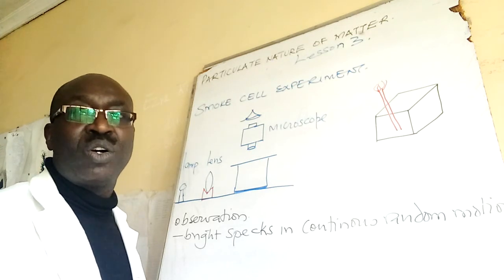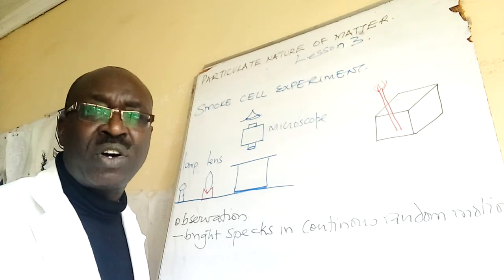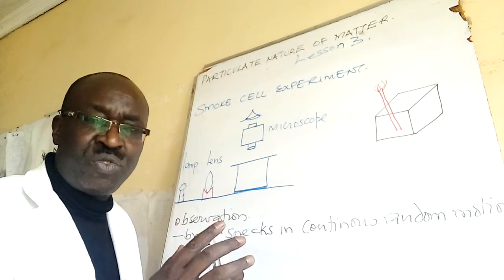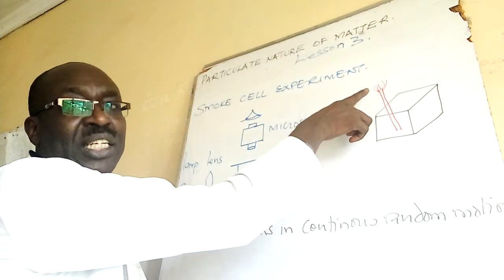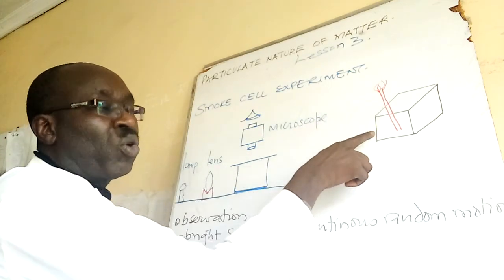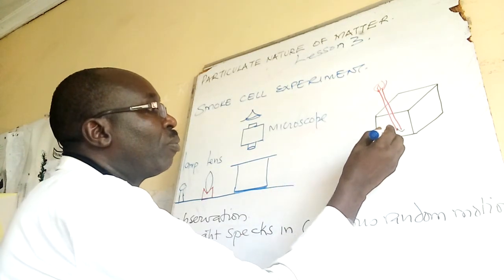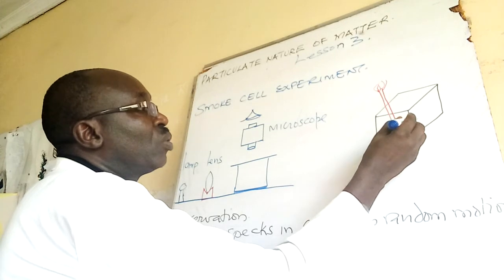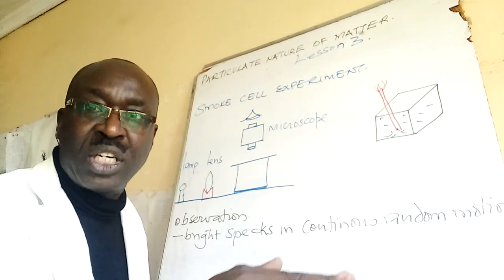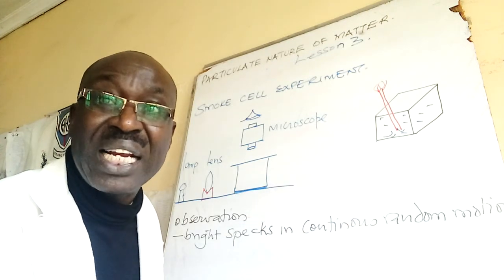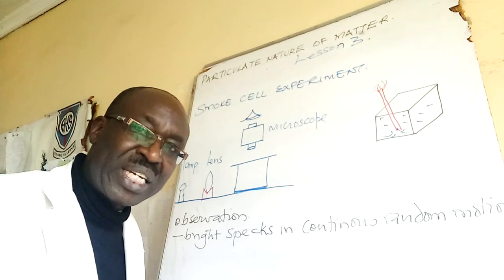How do we go about it? I'm giving you an overall view. So you need a strong straw, light it on one end and then smoke will come out and fill the compartment. After that you cover with a transparent material.